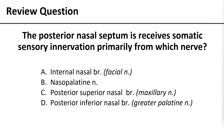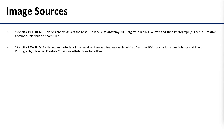That is the end of the material. Here is your review question: the posterior nasal septum receives somatic sensory innervation primarily from which nerves? The correct answer is B — the nasopalatine nerve. Thank you for joining me.